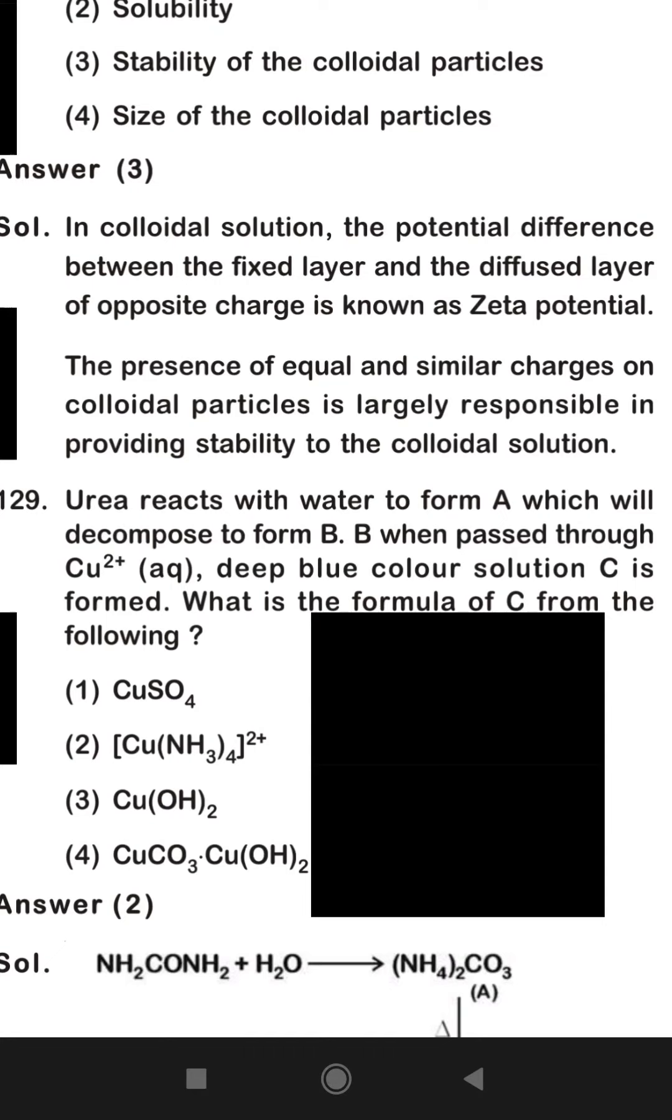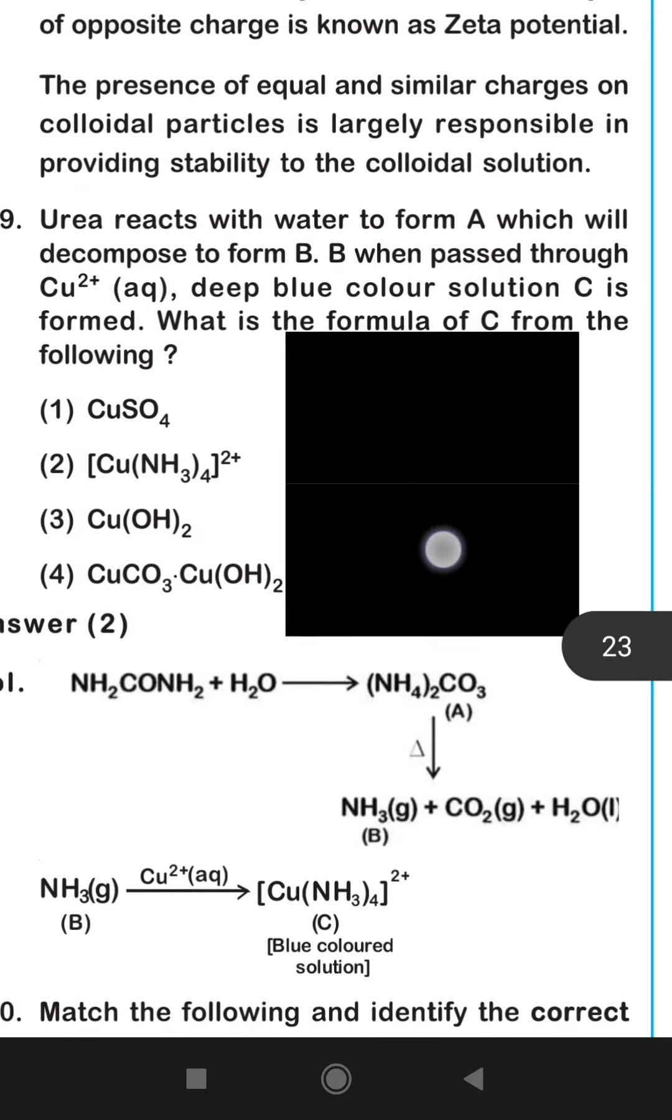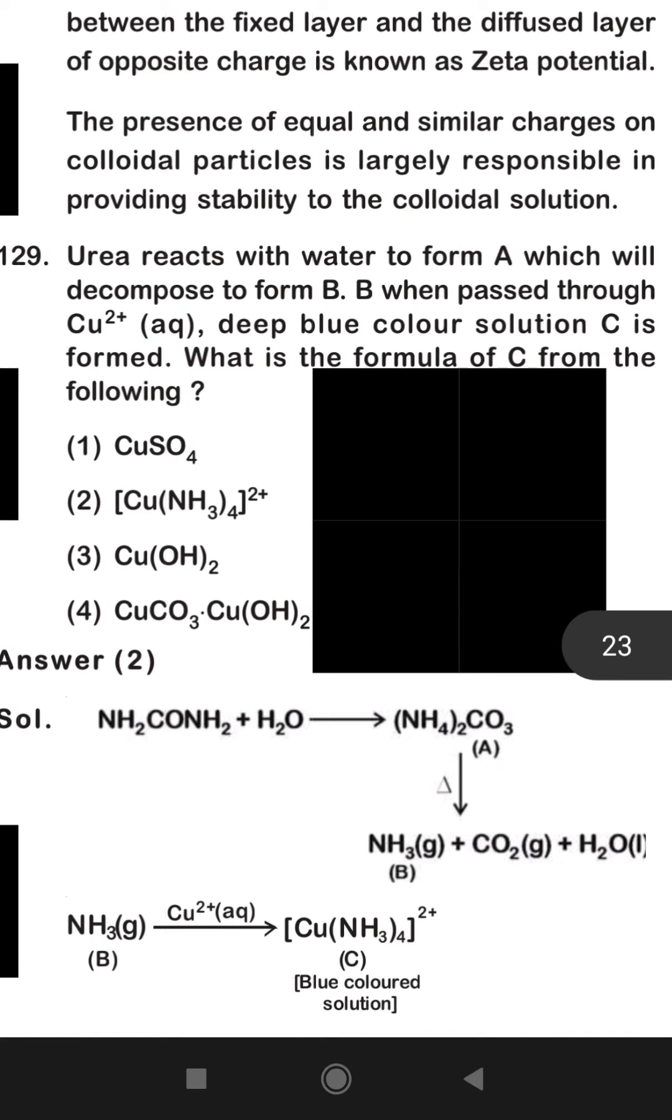Let's see this reaction. When urea undergoes hydrolysis, NH2CONH2, we find ammonium carbonate. A is the ammonium carbonate, and ammonium carbonate on heating gives ammonia plus carbon dioxide and water.